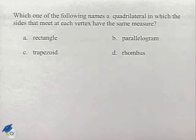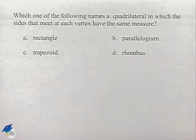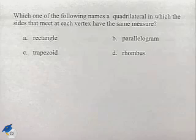In our next problem, we're going to look at some properties for polygons. Which one of the following names a quadrilateral in which the sides that meet at each vertex have the same measure?